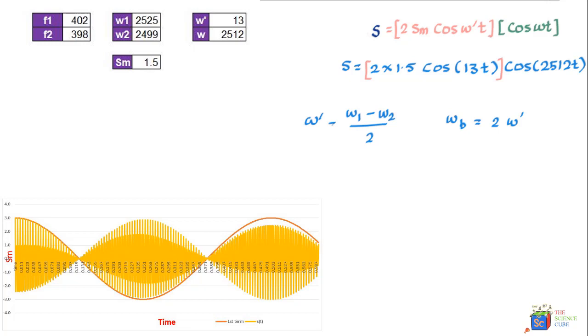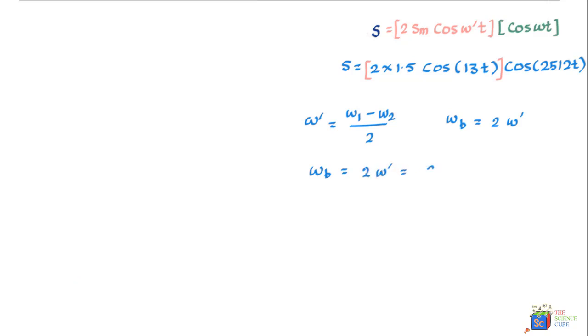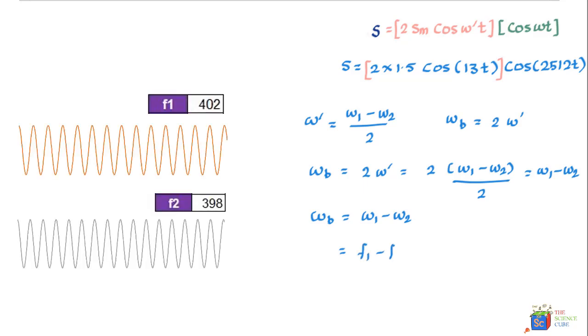This is your ω', which equals (ω1 - ω2)/2. Then the beat frequency would be 2 times ω', or we can say that ωb would equal 2 times (ω1 - ω2)/2, which equals ω1 - ω2. Your beat frequency is nothing but the difference of two angular velocities, or you could also say it's a difference of the two frequencies. What you can say here is that your frequency difference here equals 402 - 398 hertz, and therefore your beat frequency here is four hertz.